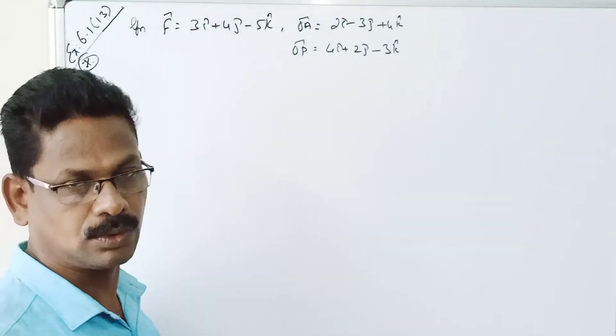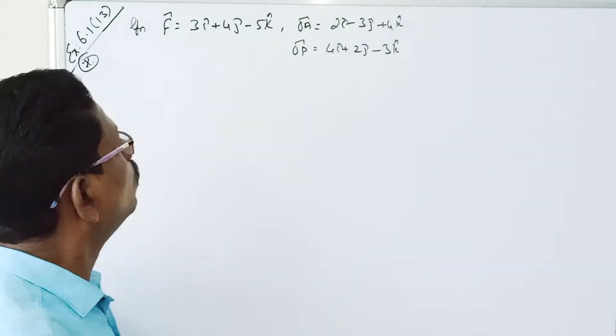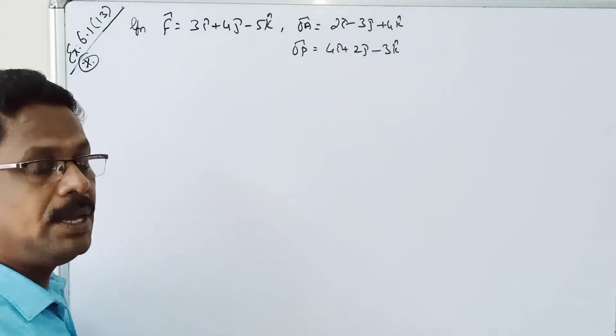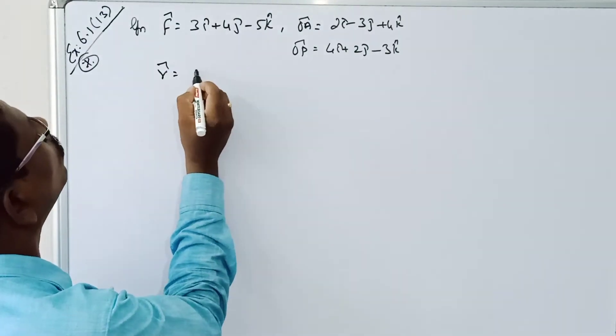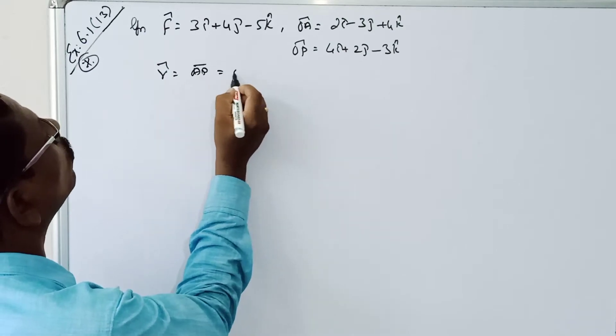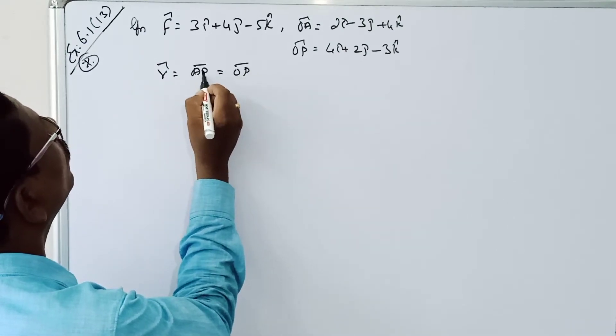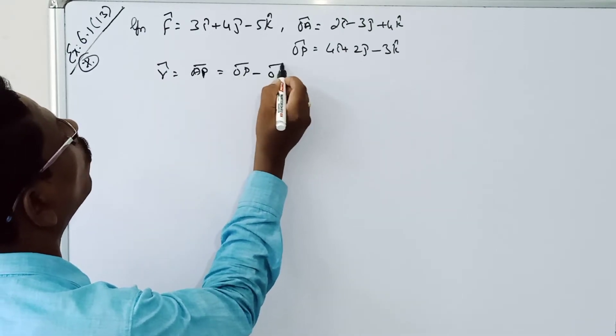So now r cross F, for r is equal to what? r vector is equal to AP, which is equal to OP minus OE. OP minus OE.